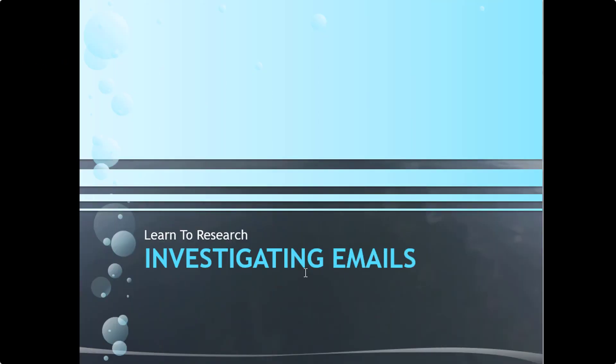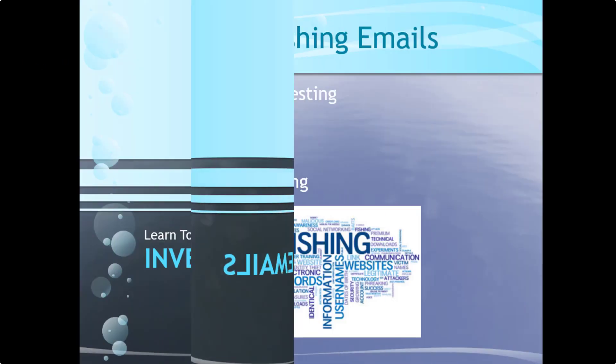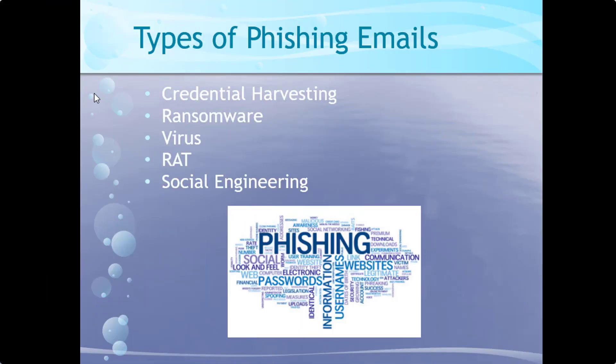Now let's go ahead and go into investigating emails. Types of phishing: credential harvesting, ransomware, virus, RAT — which is a remote access Trojan, where I can actually command something from a remote computer — and then social engineering.